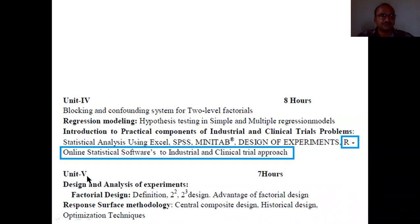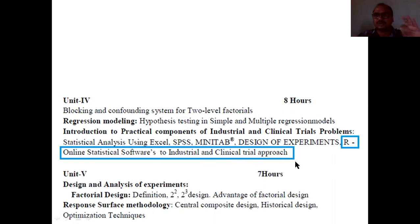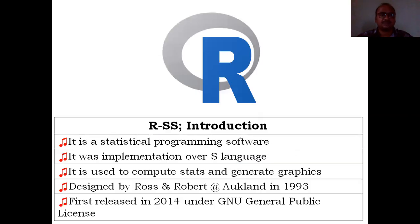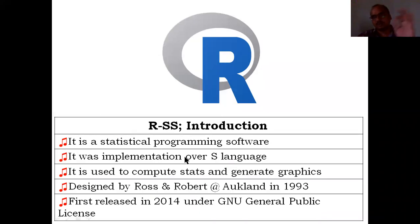We have already completed the syllabus. Our topic is online statistical software with an industrial and clinical trial approach. This is important for Pharm D students as well as B Pharmacy students — it is common for all pharmacy students. The encircled R is the official logo and symbol of the R language. It is a statistical programming software, a statistical programming language.